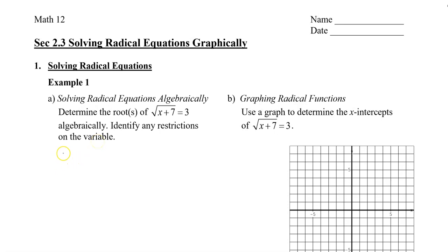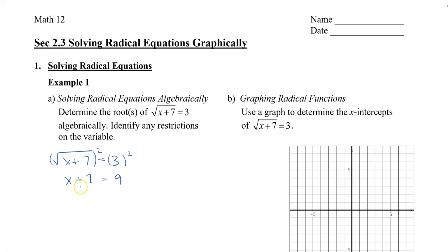I'm going to rewrite the question: root of x plus 7 equals 3. To get rid of the radical symbol, because it's a square root, I'm going to square both sides. I get x plus 7 equal to 9. And finally, subtracting 7 on both sides, x equals 2.